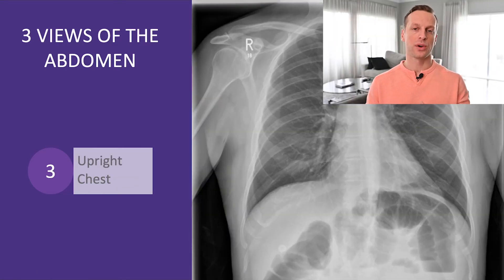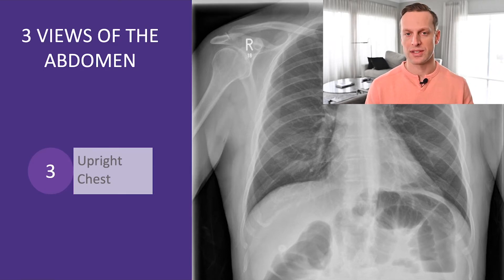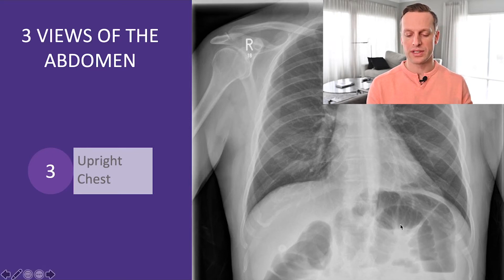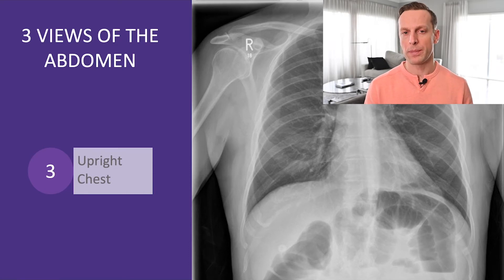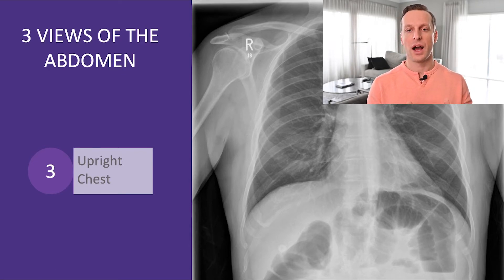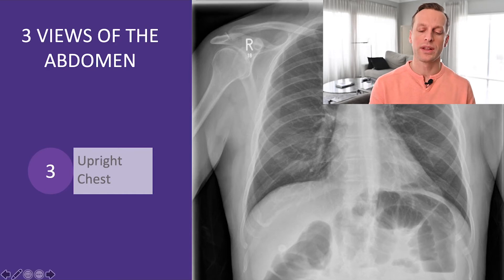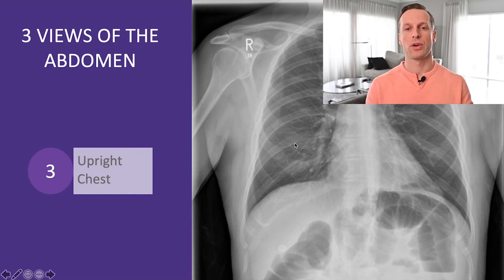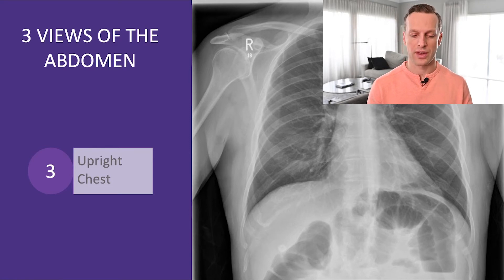The final X-ray in the three views of the abdomen is the upright chest X-ray. It will give you some clues because the abdomen is included — you'll see some signs of distended small bowel and possibly air-fluid levels — but the real purpose is twofold. One, to look for free air under the diaphragm, which is probably the most important thing we want to find. But also, chest pathology could be a cause of someone's abdominal pain complaint, and the chest X-ray helps us there.